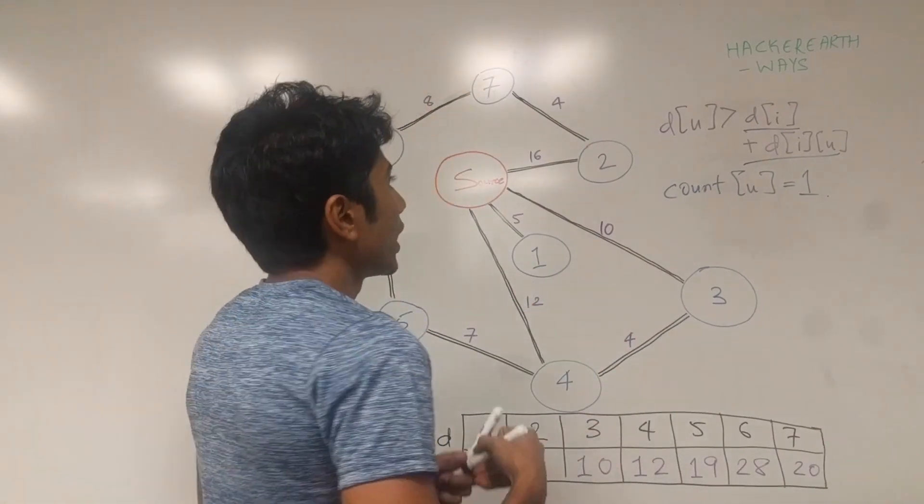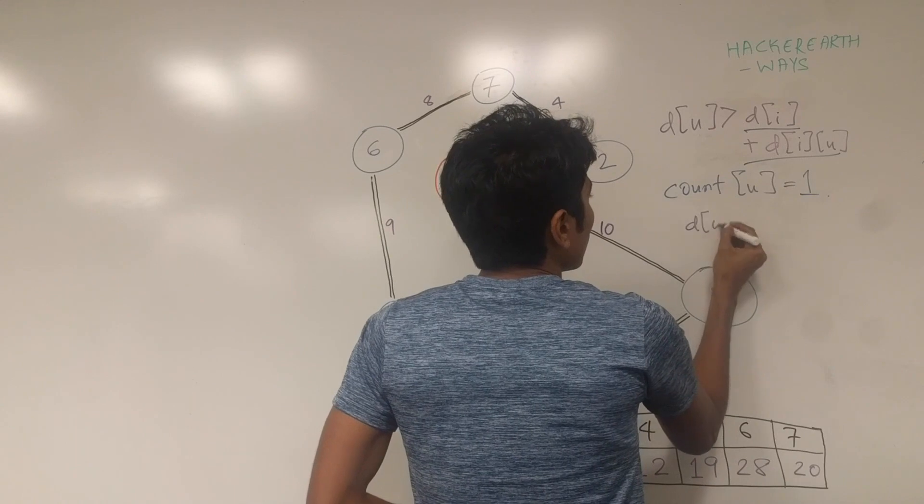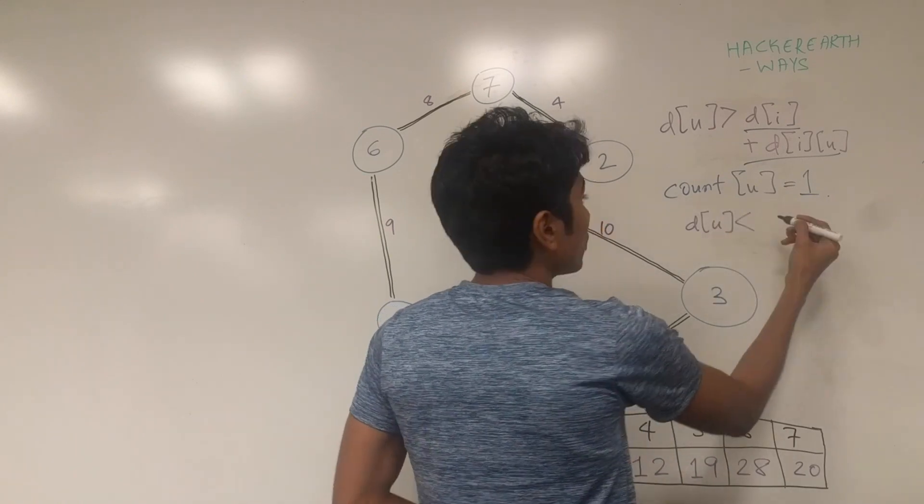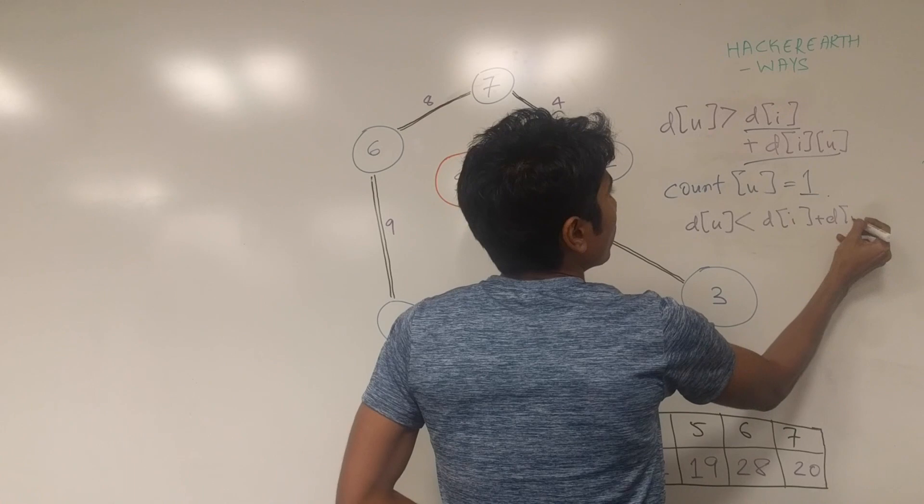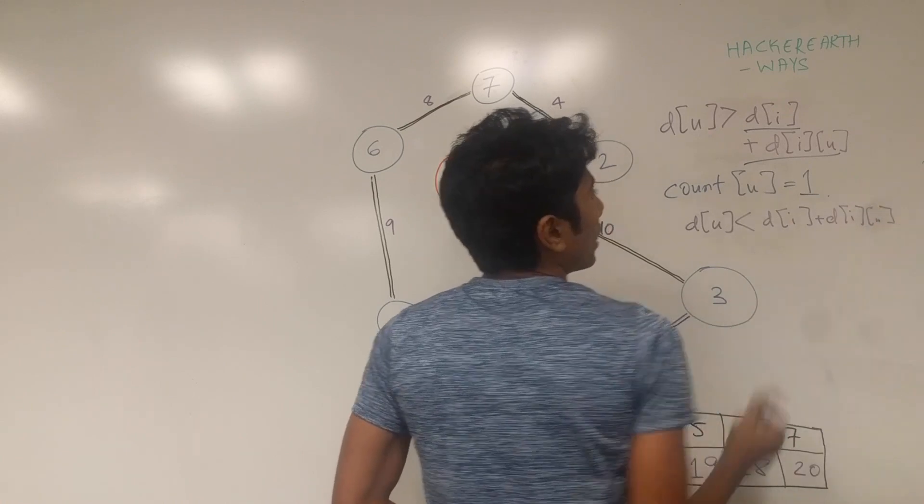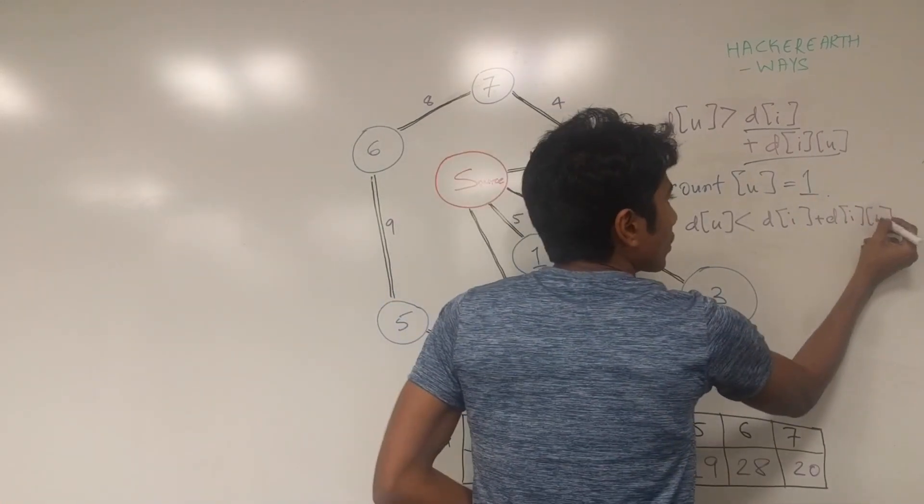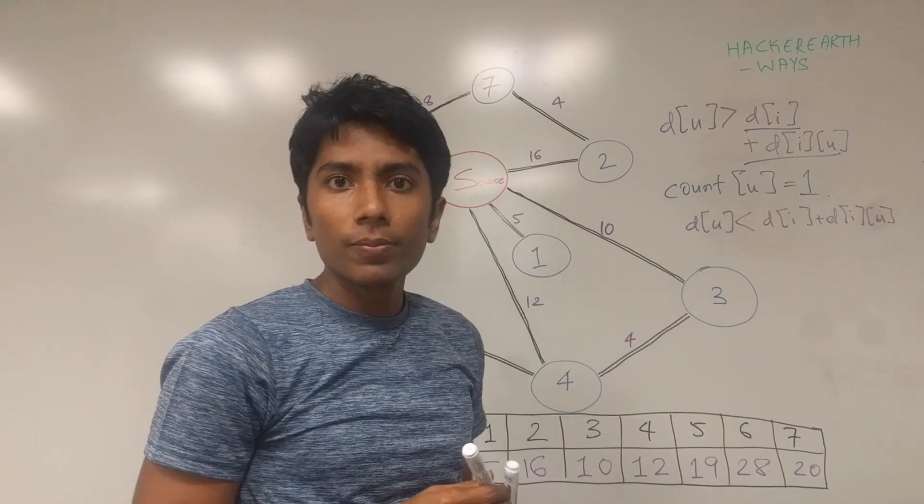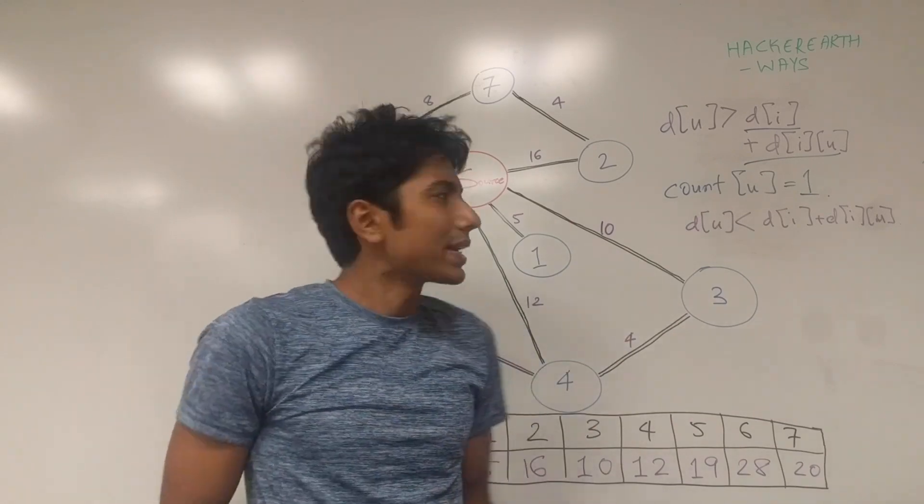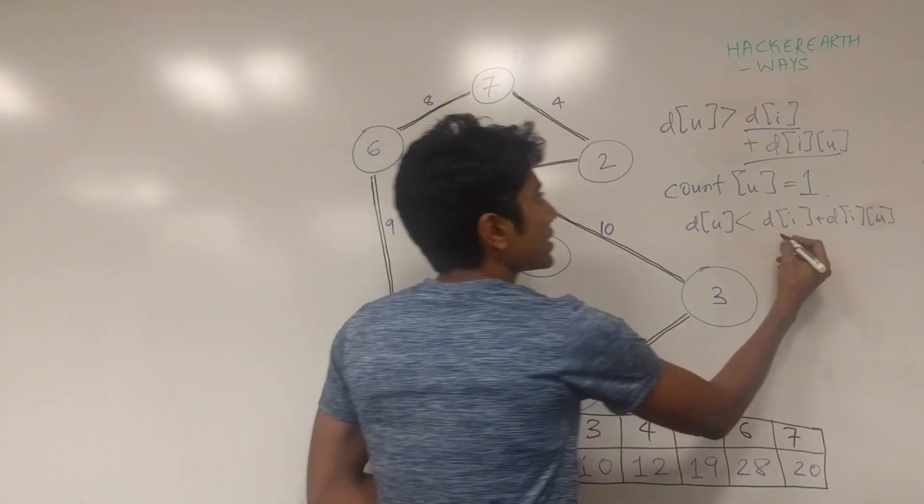What's the second condition? D of U can actually be less than D of I plus D of I comma U. If this happens, should we update count? No, it doesn't make sense because this distance is worse.